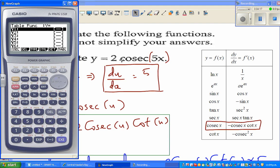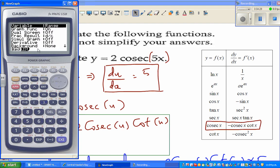2 cosec 5x is 2 divided by sin 5x. I'll write 2 divided by sin 5x. And this is in the table menu.